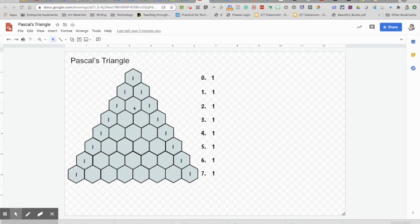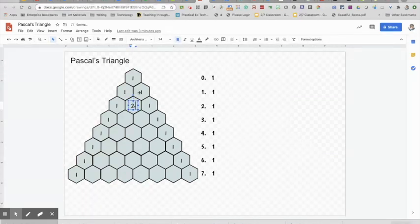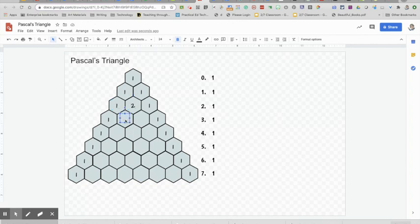Now I'm going to solve for this one. 1 plus 1 equals 2. 1 plus 2 equals 3. 2 plus 1, 3. 1 plus 3, 4. 3 plus 3, 6. 3 plus 1, 4.